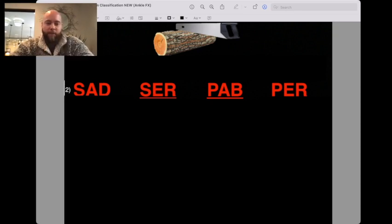SAD stands for supination adduction. Some people might prefer you to say SAD. But do not say SER, PAB, or PER. You need to say S-E-R, P-A-B, or P-E-R. S-E-R stands for supination external rotation. That is supination of the foot and external rotation of the leg. Pronation abduction is pronation of the foot with abduction, and P-E-R is pronation with external rotation.